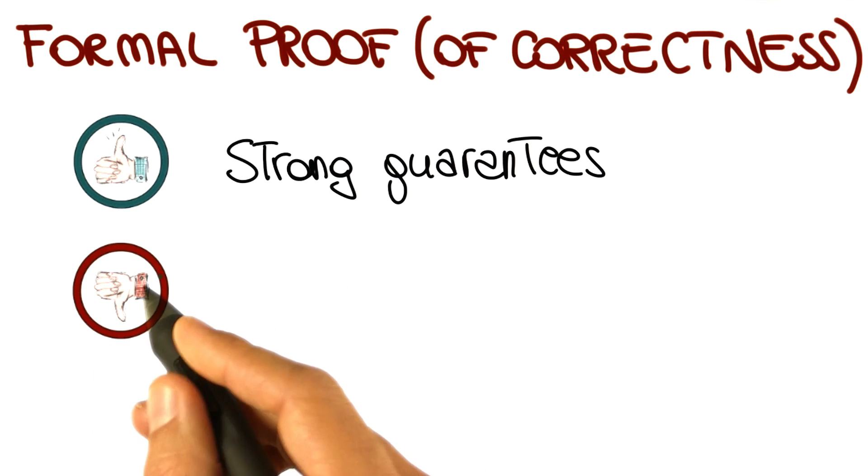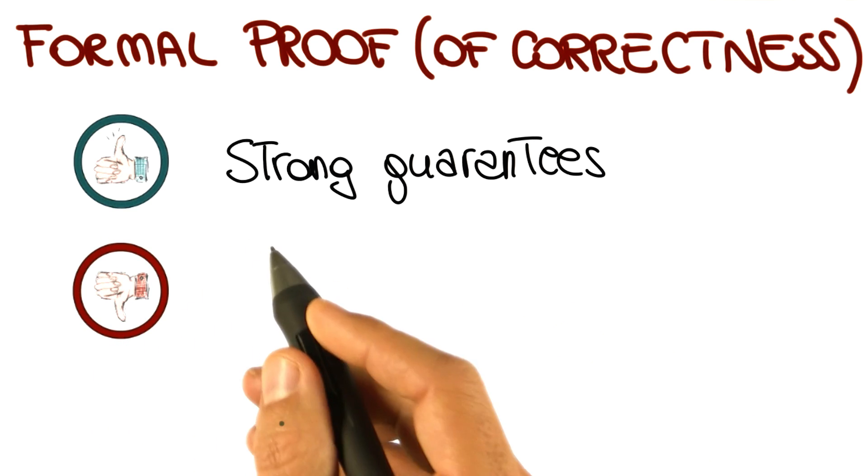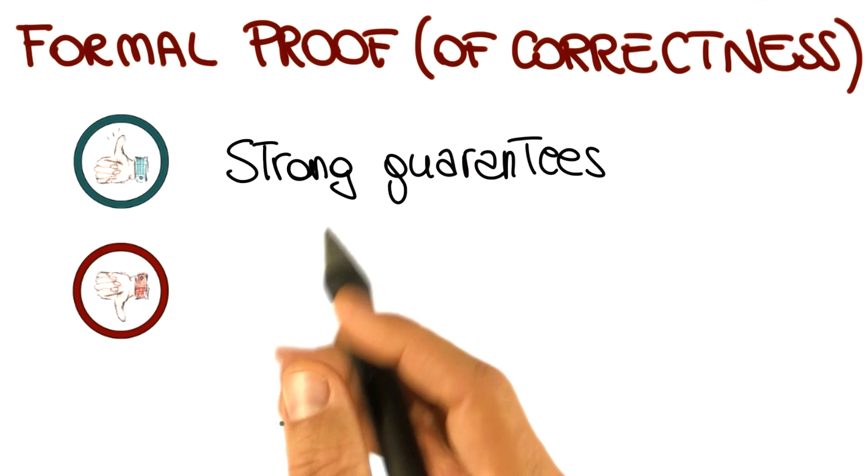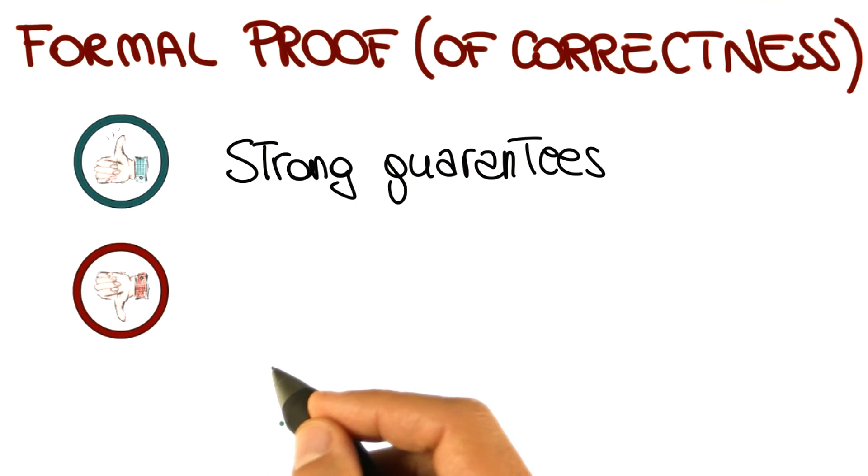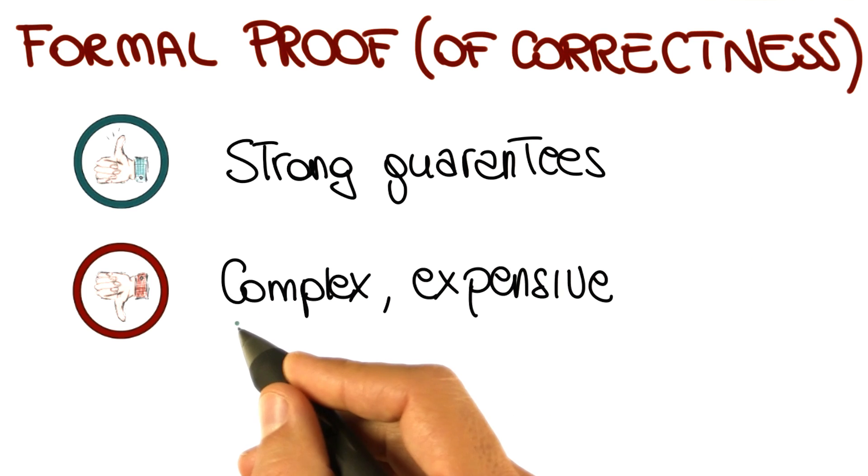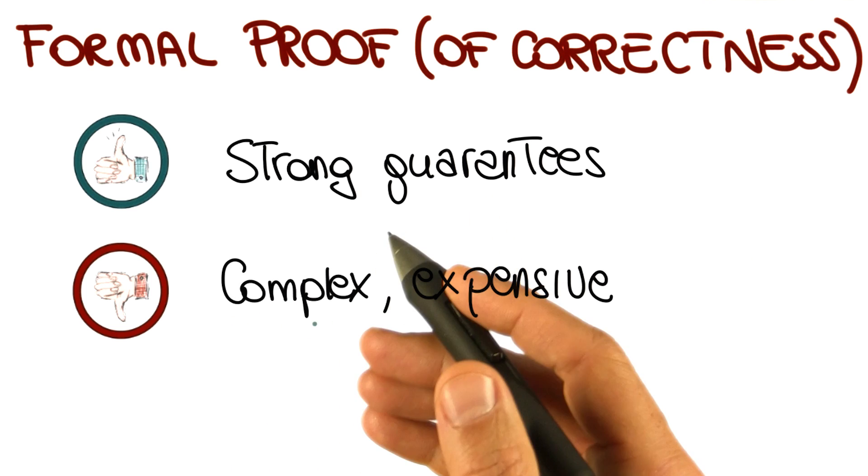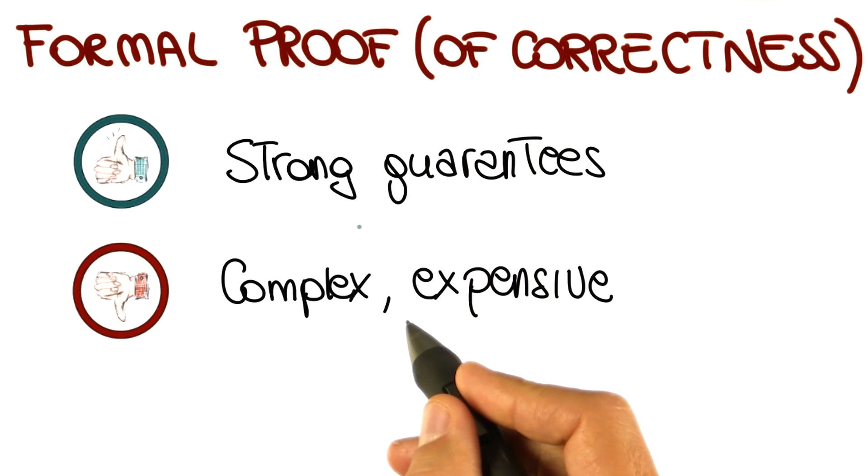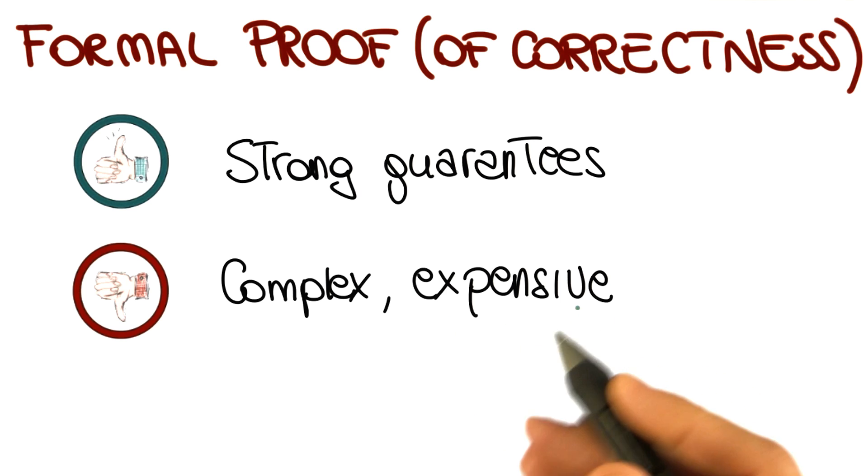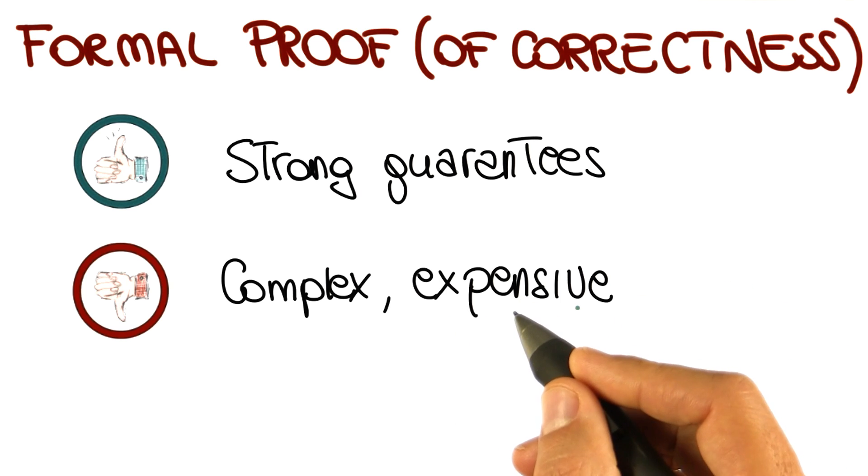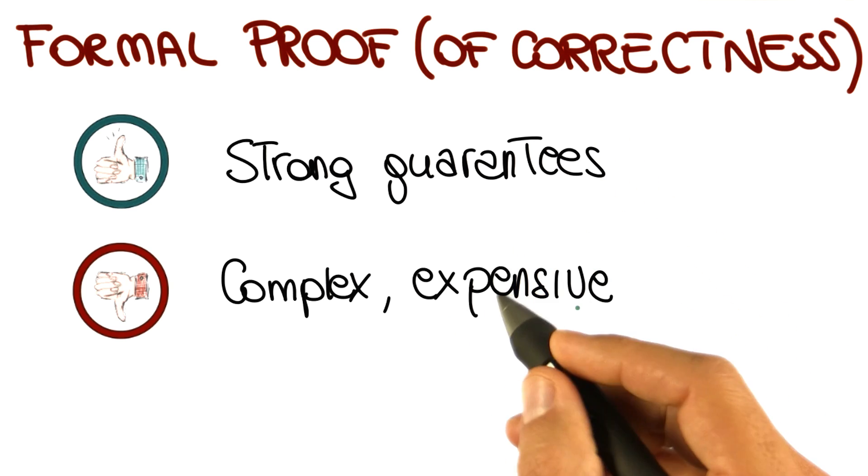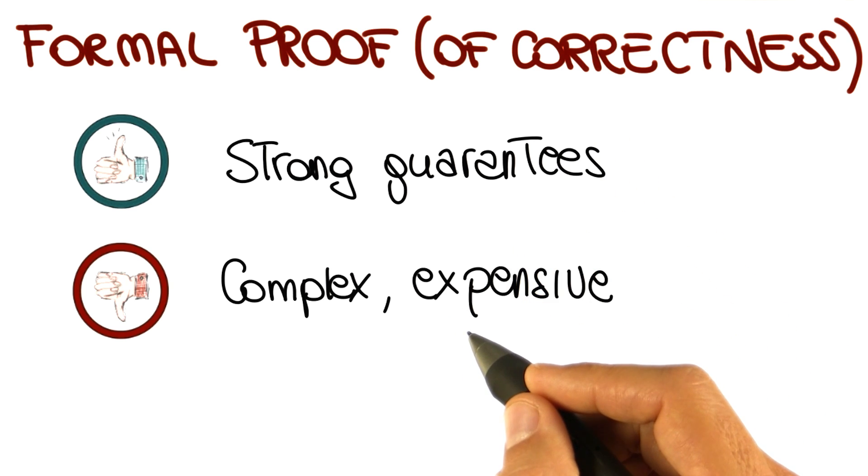But the main limitation of formal proofs is that they need a formal specification, a complete mathematical description of the expected behavior of the whole program. And unfortunately, such a specification is rarely available, and it is very complex to build one. In addition, it is also very complex, and possibly expensive, to prove that the program corresponds to a specification. That is a process that requires strong mathematical skills, and therefore very specialized person.